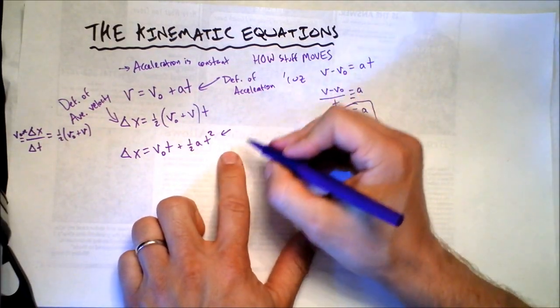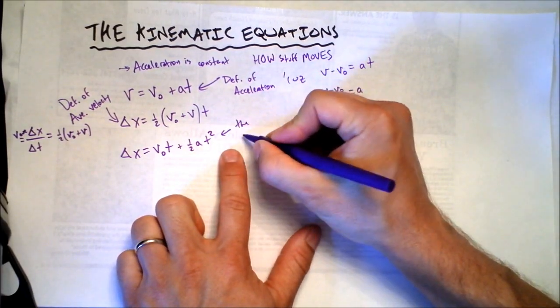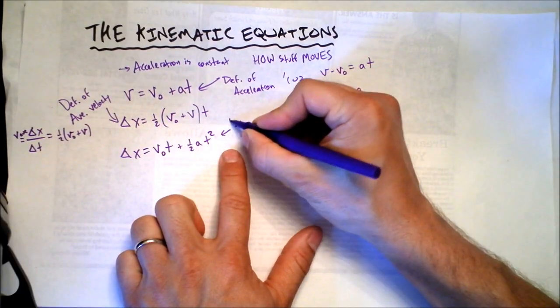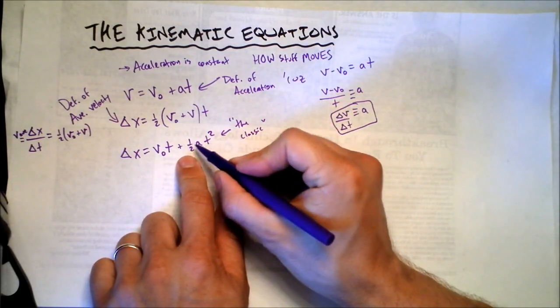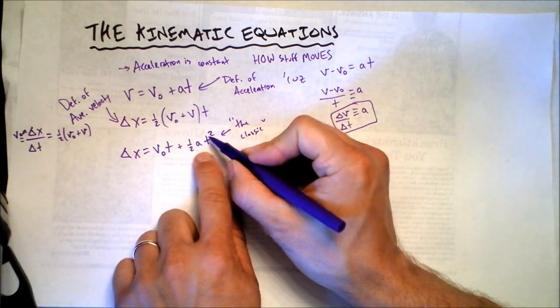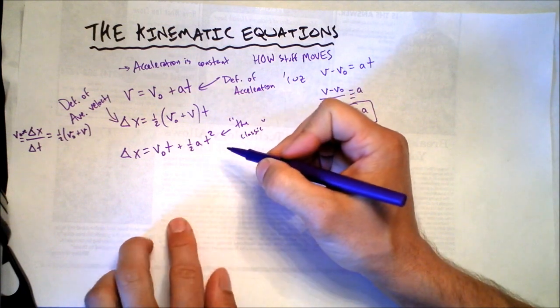This equation is so useful and ubiquitous I call it the classic. It comes from calculus. This one half and the square, you'll see this is a beautiful calculus form that comes up all the time.